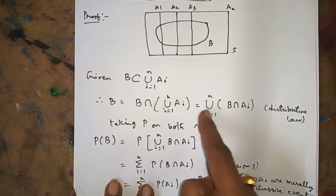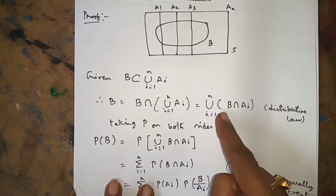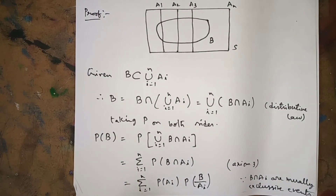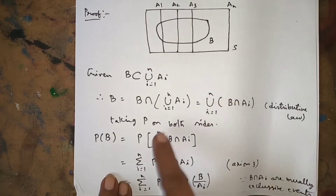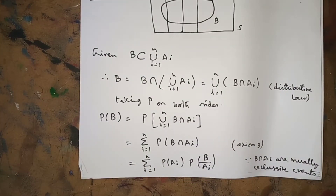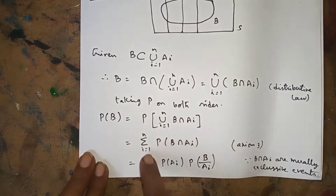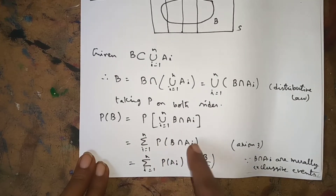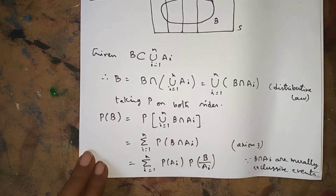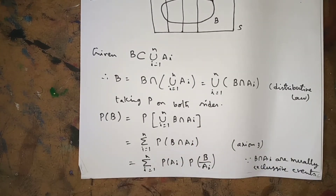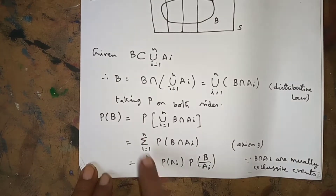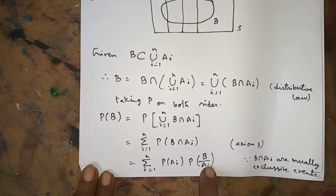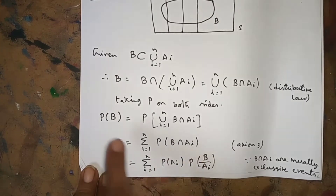By the third axiom — since B ∩ Aᵢ are mutually exclusive events — P(B) = Σᵢ₌₁ⁿ P(B ∩ Aᵢ). By the multiplication theorem of probability, P(B ∩ Aᵢ) = P(Aᵢ) · P(B|Aᵢ). Therefore P(B) = Σᵢ₌₁ⁿ P(Aᵢ) · P(B|Aᵢ). This is the Total Probability formula.